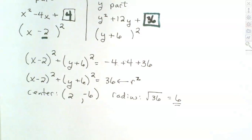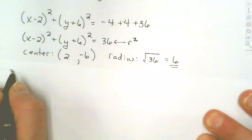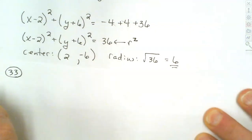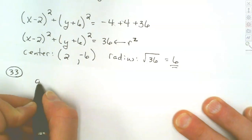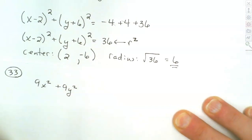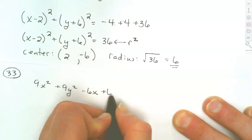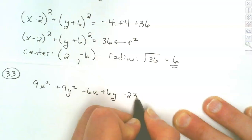Now let's look at one that has fractions — question 33: 9x² + 9y² - 6x + 6y - 23 = 0. This one's a little more difficult and requires an extra step, but it's the same concept: half and square.